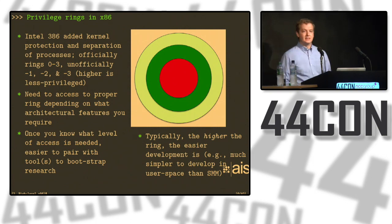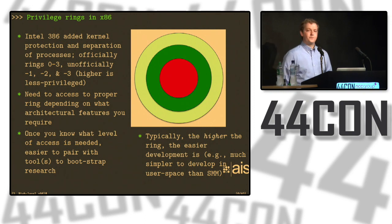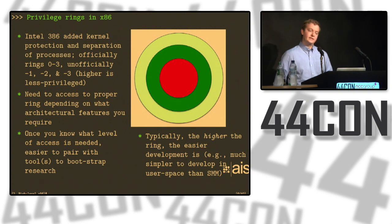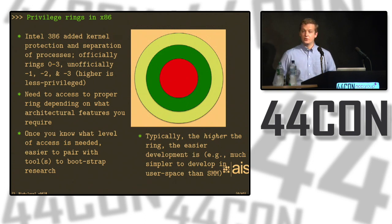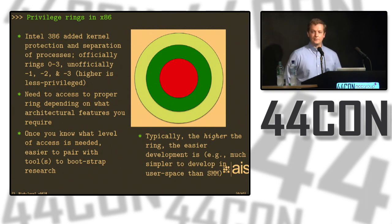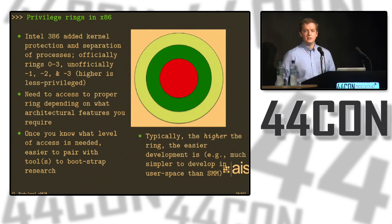So when I say I play in rings less than or equal to zero, what does that mean? Starting with the Intel 386, they added what's called protected mode — essentially different modes of execution on an Intel CPU. Back in the day before this, any application could go haywire and overwrite the kernel; there was no separation of memory and no process separation. Right now, the only ones that are really used are zero, which is where the kernel lives, and three, which is where all the applications live. Unofficially, there's also minus one, two, and three, which we'll talk about a little bit later.